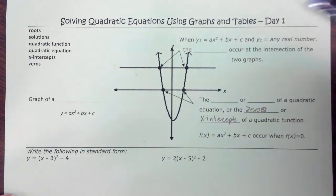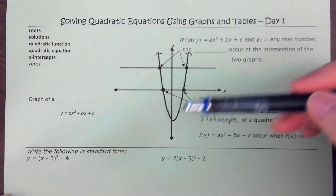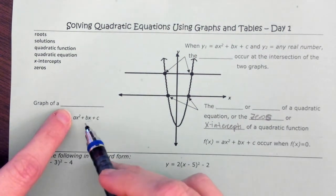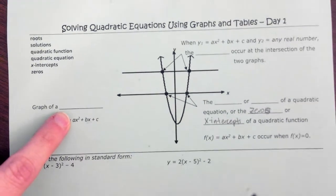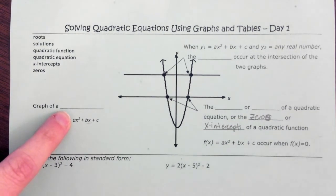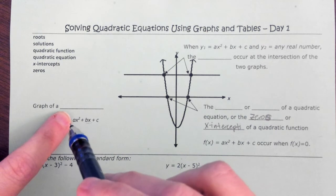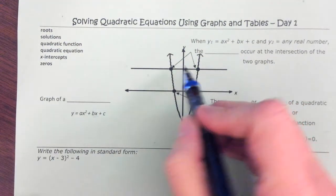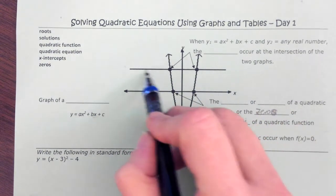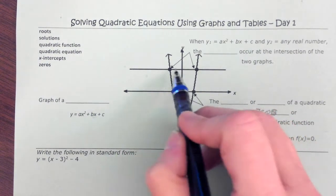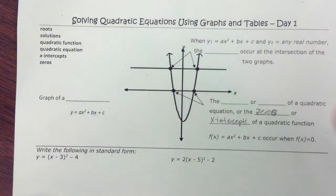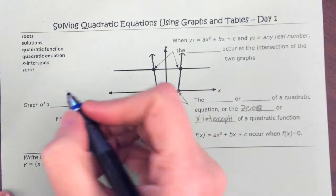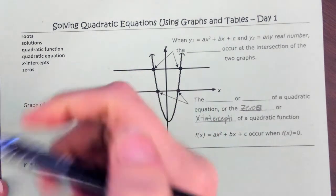Now we're going to be really focusing on what happens when instead of just having these expressions that didn't have an equal sign, what happens when I say this is actually equal to something? I want to know what happens when y is 5. Well, when y is 5, maybe this is 5. The parabola crosses in two places. What are the values of those places? So let's start by naming some of this new vocabulary.